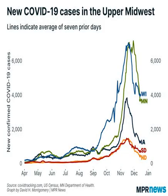Few white settlers came to the North Dakota region before the 1870s because railroads had not yet entered the area. During the early 1870s, the Northern Pacific Railroad began to push across the Dakota Territory. Large-scale farming also began during the 1870s, as eastern corporations and some families established huge wheat farms covering large areas of land in the Red River Valley. The farms made such enormous profits they were called bonanza farms.